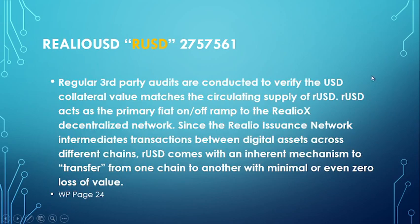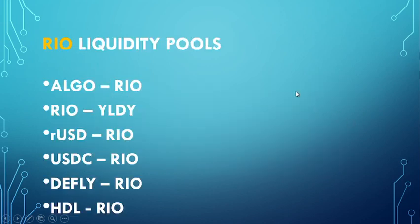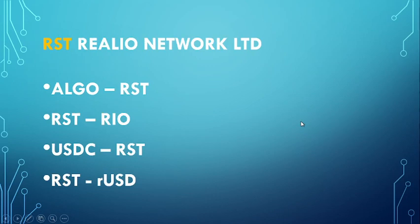Regular third-party audits are conducted to verify the US dollar collateral value matches the circulating supply of RUSD. RUSD acts as the primary fiat on/off-ramp for the Realio network, and since the Realio issuance network intermediates transactions between digital assets across different chains, RUSD comes with an inherent mechanism to transfer from one chain to another with minimal or even zero loss of value. Now looking at the pools on Yieldly: the RIO utility token pool is linked with ALGO, Yieldly, the stablecoin, USDC, dFly, and HDL. The RST security token is linked with ALGO and RIO.